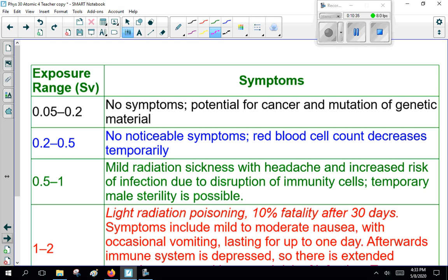0.2 to 0.5, no noticeable symptoms, red blood cell count decreases temporarily. You don't notice it, but it does affect you. Now, 0.5 to 1 sievert is what we call mild radiation sickness. You'll get headaches, increased risk of infection due to disruption of immunity cells. Temporary male sterility is possible. Temporary sterility for men.